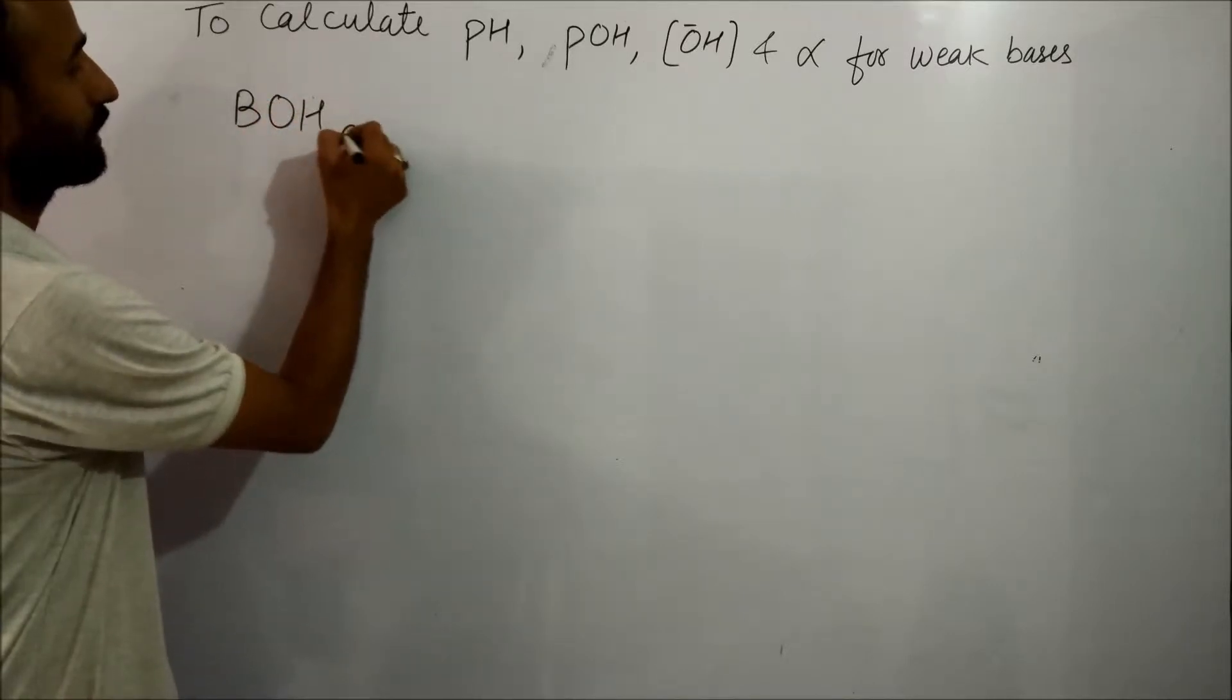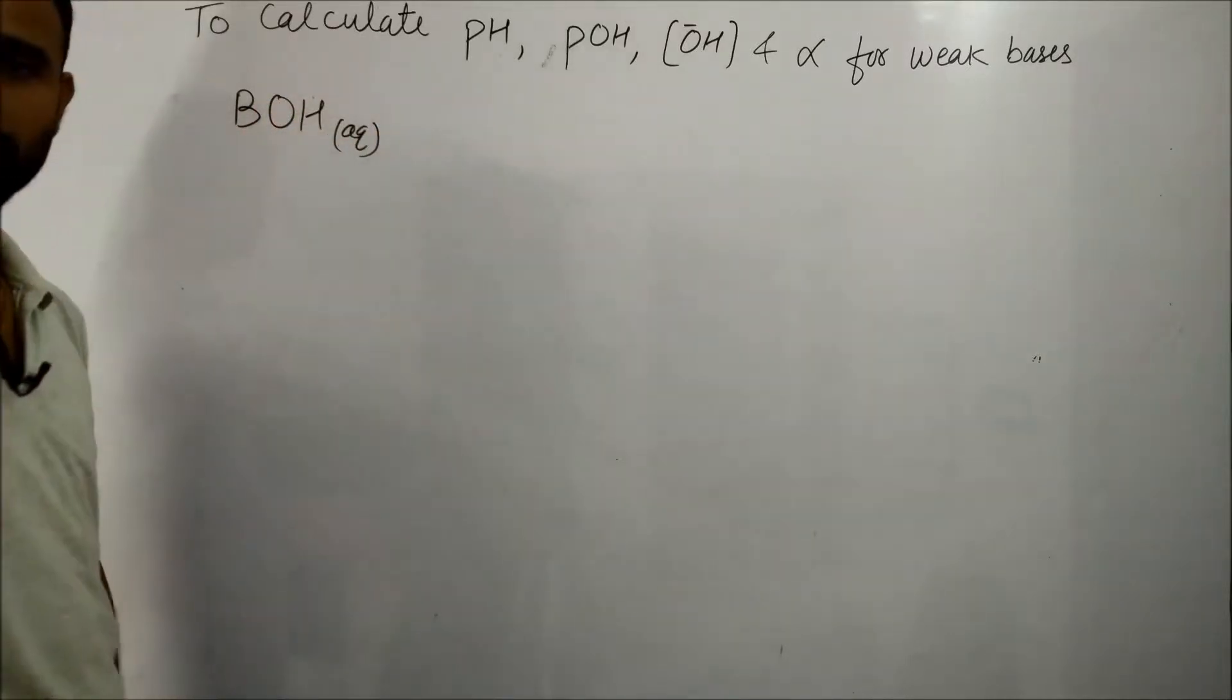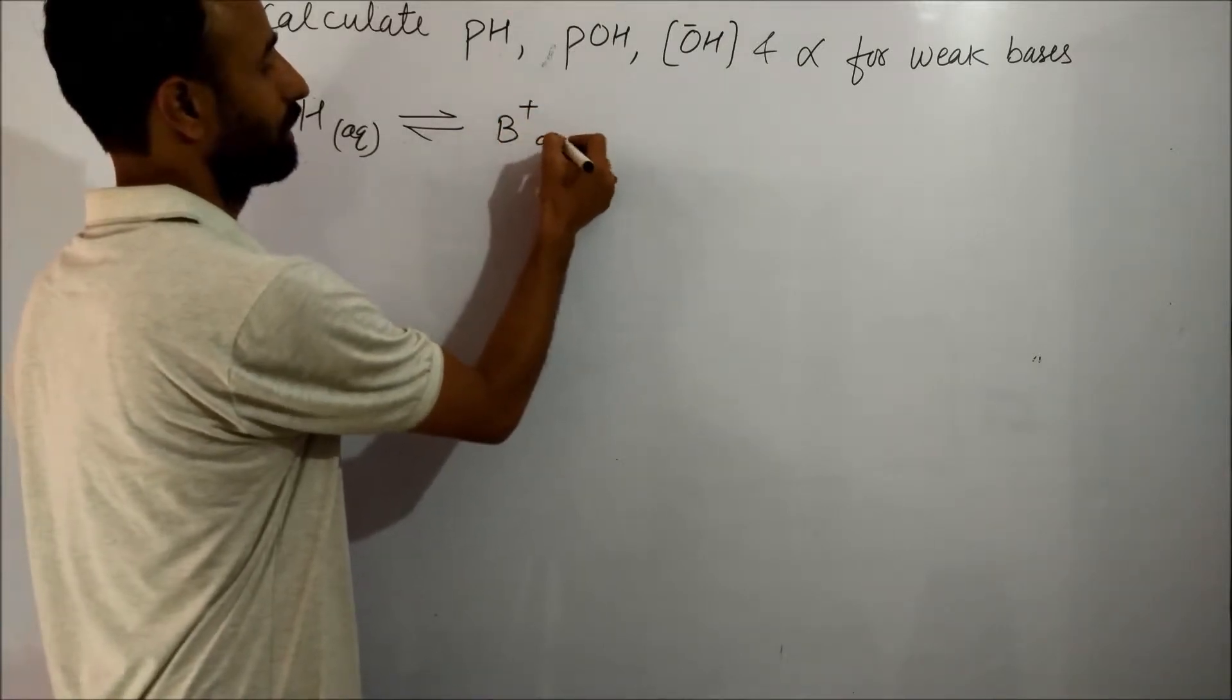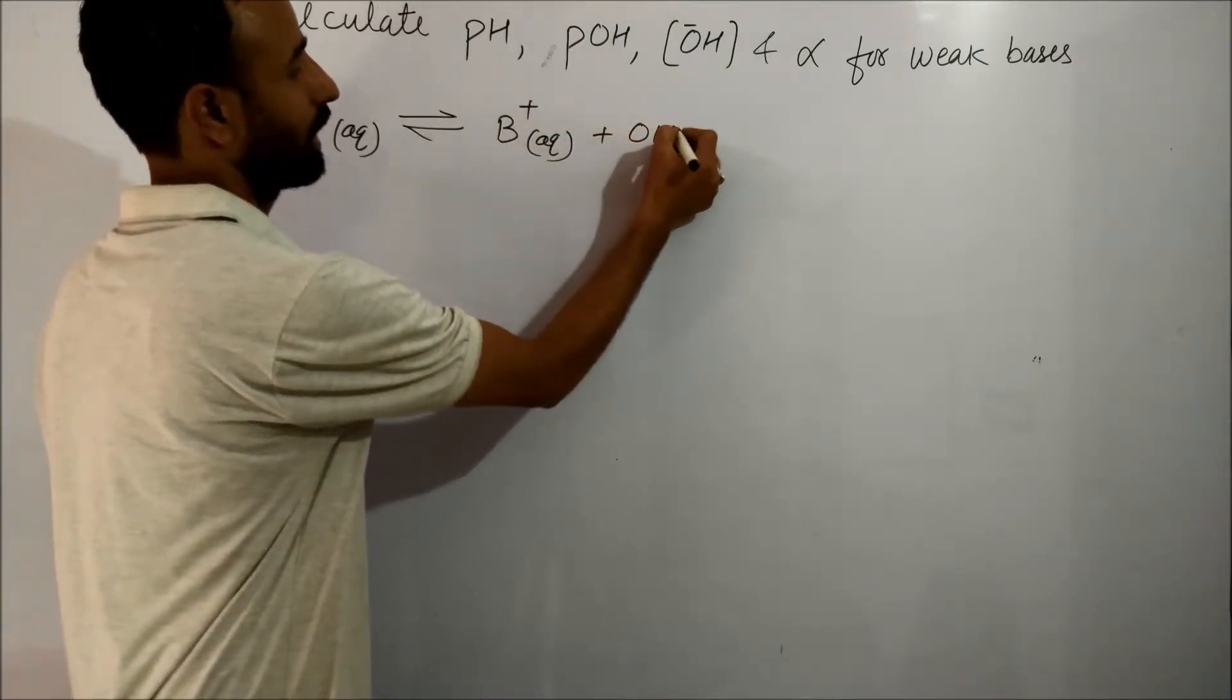Let us consider a weak base BOH. It gives B⁺ and OH⁻ concentration.